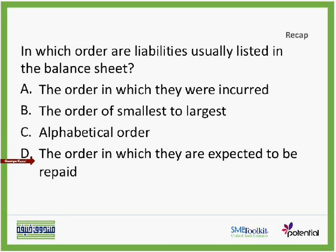The correct criterion is the order in which they are expected to be repaid. On the balance sheet, on the asset side, we put items in the order we expect to receive them. Accordingly, on the liability side, we put items in the order in which we expect to pay them out. So the answer should be D.